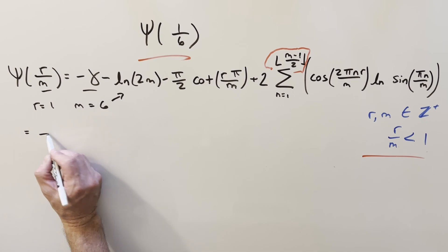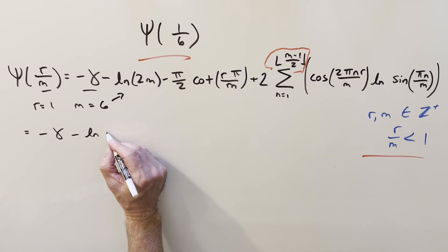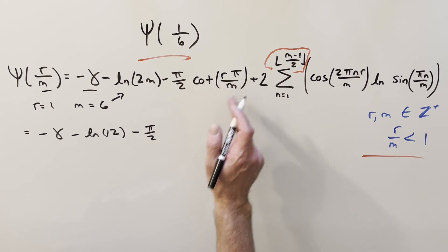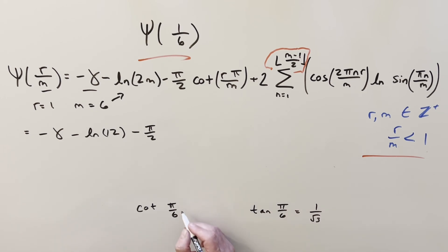And then all we're going to do is just plug in values to this thing. First, we have here the Euler-Mascheroni constant, which is something around approximately 0.577 minus natural log. Plug a 6 in here. We have natural log of 12 minus pi over 2 cotangent r over m pi. It's just going to be pi over 6. Cotangent at pi over 6. I like to remember the tangent values. Tangent at pi over 6 is just 1 over square root of 3. Cotangent is just going to be the reciprocal. So this value is going to be just square root of 3.